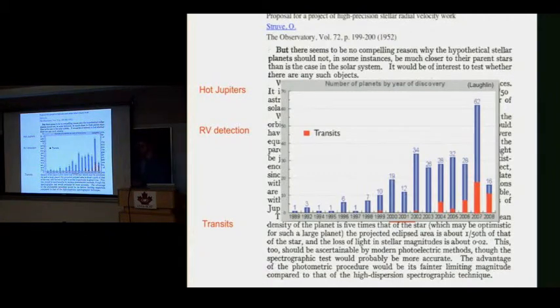This seems like really hot new stuff, but in 1952 Otto Struve said we ought to be going out and looking for these planets. He suggested, I don't care what the theorists say, let's suppose there are Jupiter mass planets in one-day orbits around their stars.